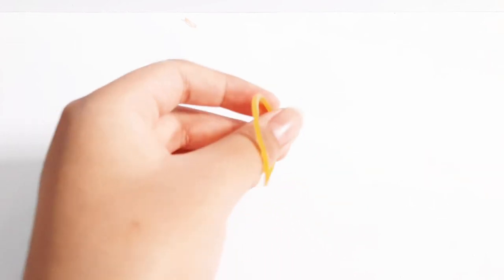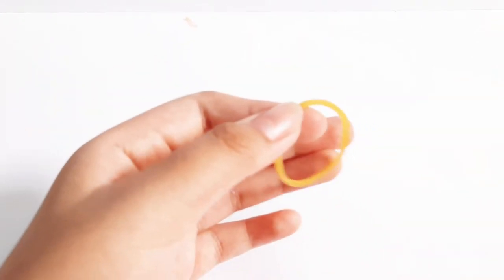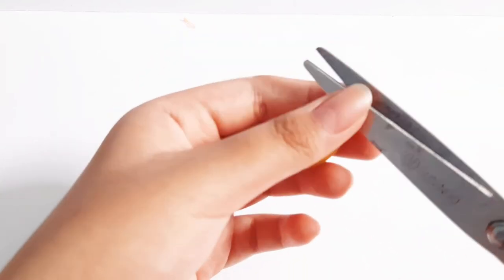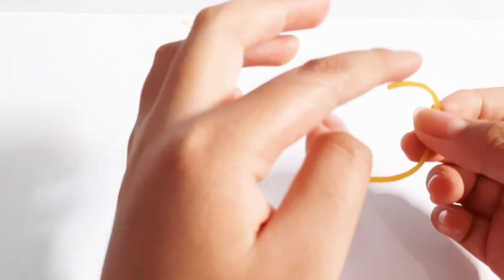The things that you'll be needing to make this last fidget are a rubber band, scissors, and a straw. So let's get started. First thing you want to do is cut your rubber band in half like this, then tie a knot at the end.